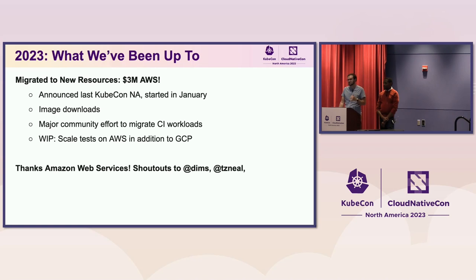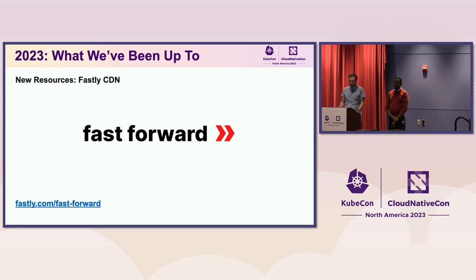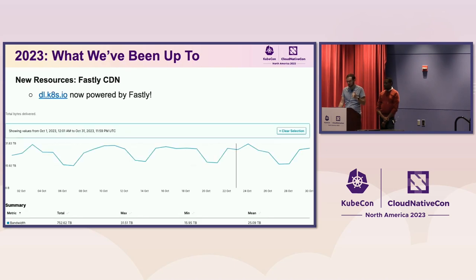Shout out to Dims and TZNeil at Amazon for helping with this effort. We love Fastly — they came to an agreement with us for their Fast Forward program this year, giving us a very large amount of CDN bandwidth for our binary downloads: kubectl, kubeadm, kubelet. So dl.k8s.io, our download host, is now powered by Fastly CDN, soaking up a huge amount of traffic. This all used to be served out of a GCS bucket in one region. Thank you, Hannah — run Fastly.